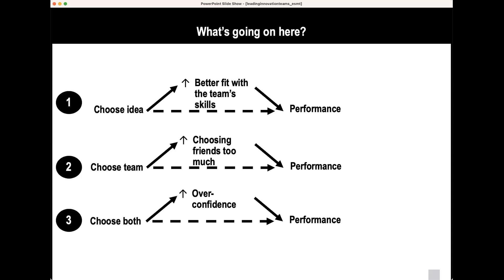Those who have the ability to choose their team choose their friends way too much, which lowers their performance. There is quite a bit of other research pointing in this direction — that even people who are incredibly well motivated to find the best new collaborators still choose their friends too much to come up with productive new ideas. The third finding is that those who choose both team members and ideas are super confident about the idea, but this leads to overconfidence. When asked how likely they are to continue, they all love their idea and wanted to seek funding — but that overconfidence lowers their performance.